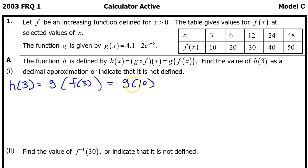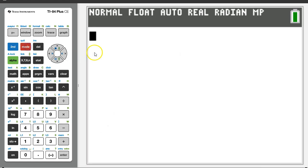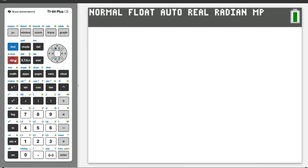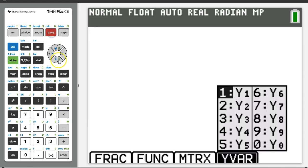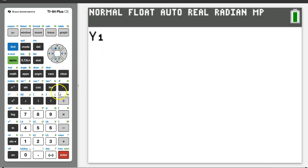We'd like to evaluate g at 10. That means on the calculator, we need to evaluate y1 at 10. Quit out of this by hitting 2nd quit, and we can make y1 show up by hitting alpha, trace, and then enter. We can evaluate y1 at 10 by putting 10 inside of parentheses next to y1 and hitting enter.